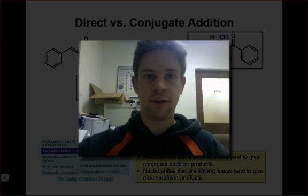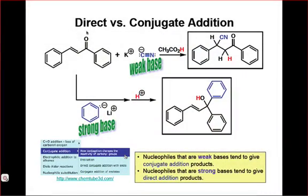In this webcast, we're going to take a look at some of the factors that dictate 1-2 versus 1-4 addition. At the top of this slide, you'll notice that weak bases tend to do conjugate addition to carbonyl compounds, whereas below it, you'll see that a strong base, such as phenyl lithium, tends to do direct addition to carbonyl compounds.